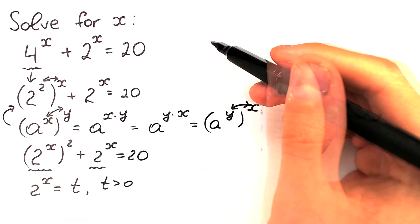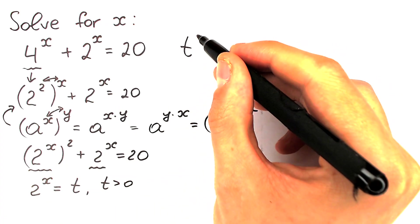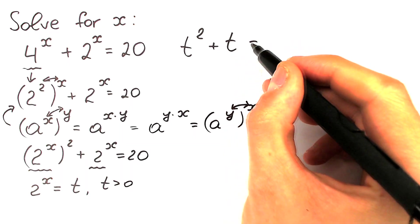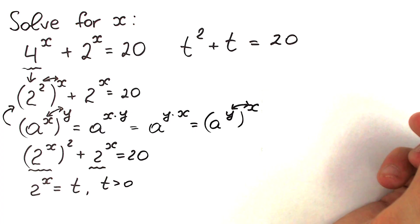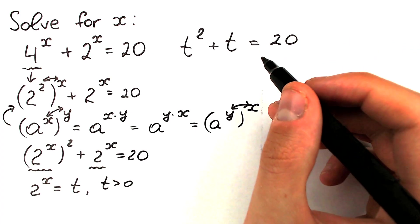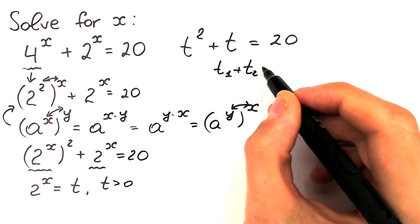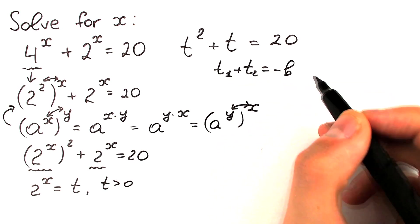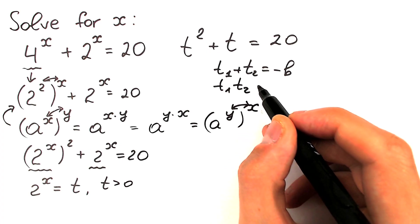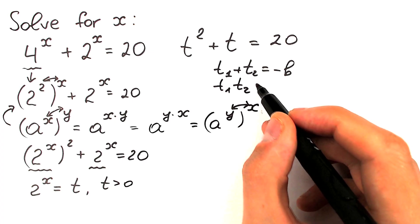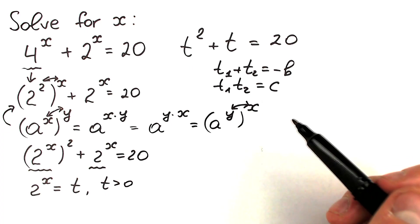Right here we have a quadratic equation. We have t squared plus t equal to 20. I'm going to use Vieta's theorem: the sum of roots t1 plus t2 equals minus b, and t1 times t2 equals c. This is a really great theorem and we can find the roots using it.